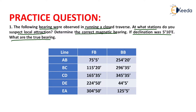We have to find the stations where we suspect local attraction, as well as find the correct magnetic bearing. If declination was 5 degrees 10 minutes east, then we have to find the true bearing of lines AB, BC, CD, DE, and EA. In the given table, forebearing and backbearing are provided. Before solving this numerical, we have to calculate the difference between the forebearing and backbearing.